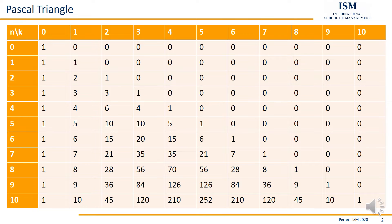Basically, we start with a 1 in the upper left. Then we fill all the other numbers with zeros, and we imagine that here on the left there are also zeros. Because then, when we calculate a new number, we always consider the number above it and above and to the left — so above and upper left — and we add them up.